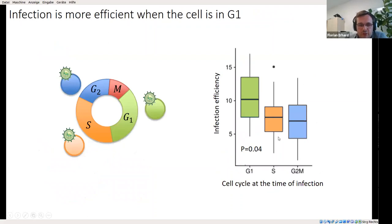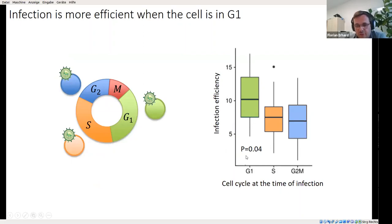Another important factor is the cell cycle. For human CMV, it has been shown earlier that cells in S phase cannot be infected very efficiently. We could nicely recapitulate this finding: in our data, cells that were in G1 phase at the time of infection can be infected much more efficiently than cells in any other phase.